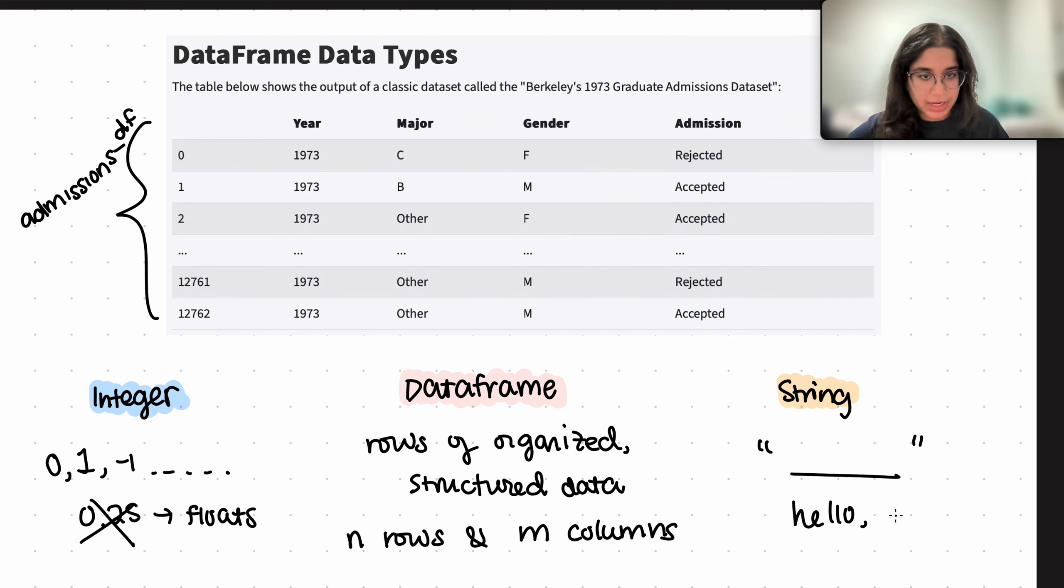Or for example, in this data set, we have accepted is a string. And it can also be five. If the number five is surrounded in quotes, that's a string.